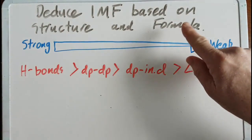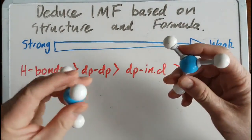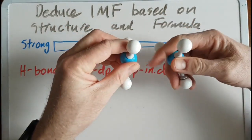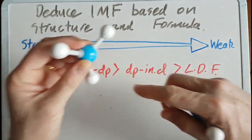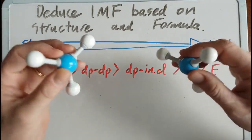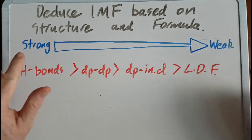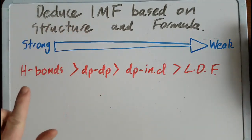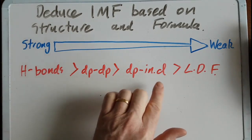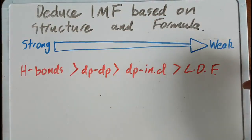We're going to deduce the intermolecular forces based on structure and formula. Intermolecular forces are the forces between molecules, not the ones within the molecule. We're only going to be talking about simple covalent molecules here, not diamond, which is a giant macromolecule. A quick review: the strongest of the intermolecular forces is hydrogen bonds, followed by dipole-dipole, dipole-induced dipole, and finally London dispersion forces. These are all van der Waals bonds.